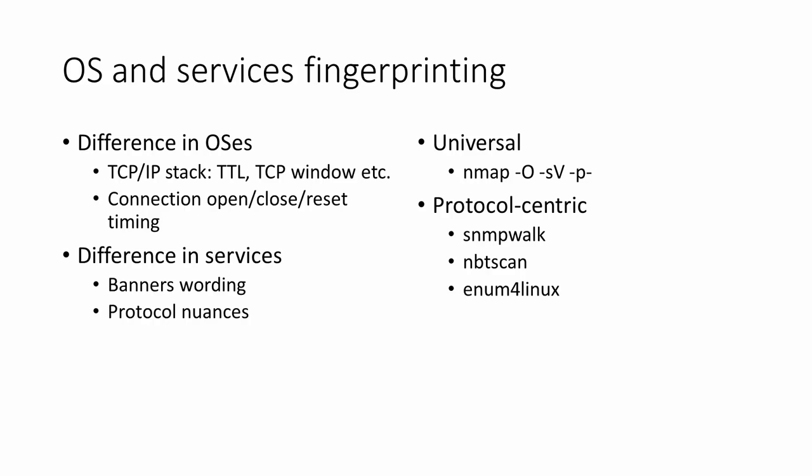There are slight protocol nuances — some of which we have already discussed, for example in SMTP. Some services expect you to behave differently, and this gives us information. Our tools will make conclusions about what these services are based on slight differences in how the protocols are processed, even though those protocols should be common between different services.